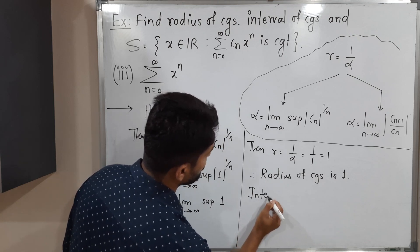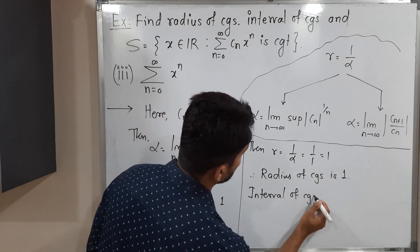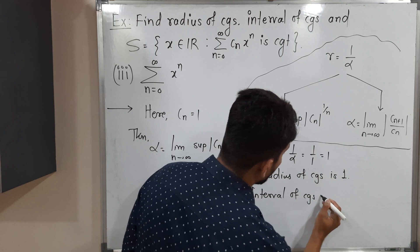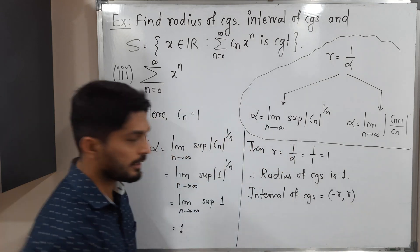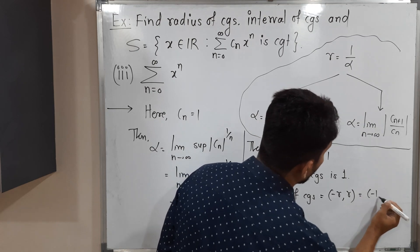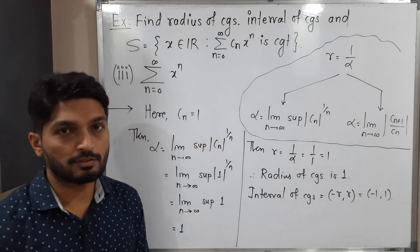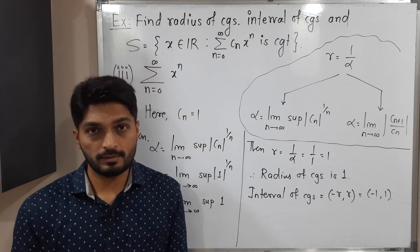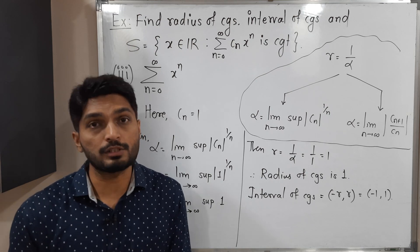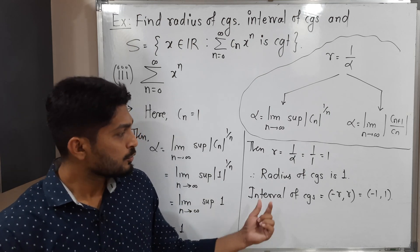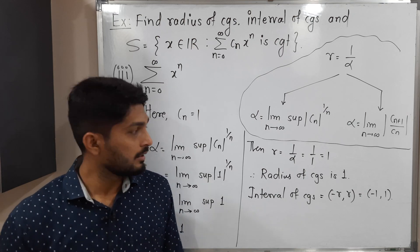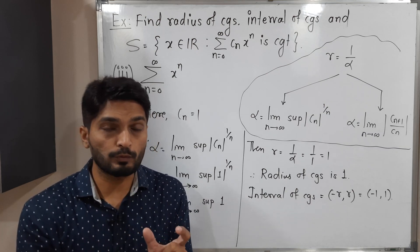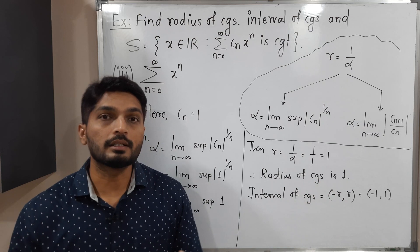Let us find the interval of convergence. The formula is (-R, R), which equals (-1, 1). So that is the interval of convergence. After that we find set S — the set of real numbers for which the series is convergent. The interval of convergence has the same meaning: any point inside the interval gives a convergent series, and any point outside gives a divergent series. We are only doubtful about the two boundary points, so we check whether the series is convergent at x=1 and x=-1.